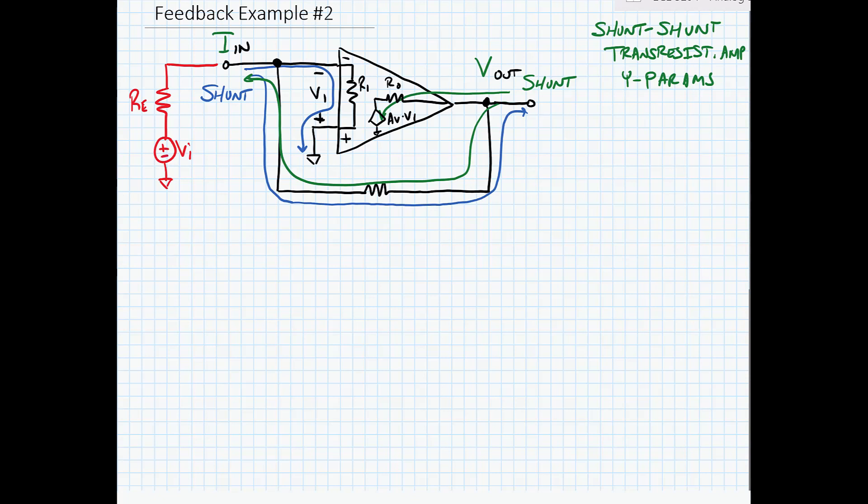Because of the virtual ground, this means that there's a virtual ground on the other side of this resistor. And our IN is equal to Vi over RS. And of course there's a minus sign here since the reference current is going the opposite direction from the calculation.